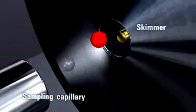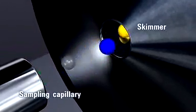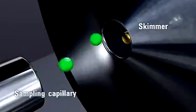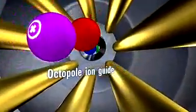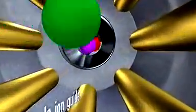A thin skimmer aperture, carefully matched hole size, and short capillary to skimmer distance reduce beam broadening. An on-axis octopole ion guide provides nearly 100% ion transmission over a wider mass range.